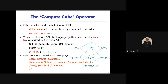The measure is the sum of the sales amount in dollars. You can also use other currencies like rupees. The next step is to compute the cube from the result. These are the two main steps to define a cube in DMQL.